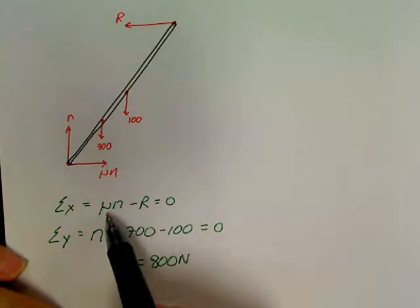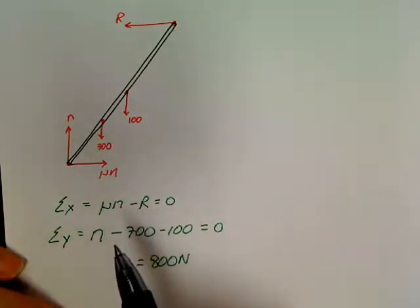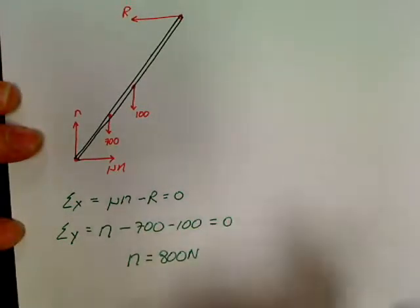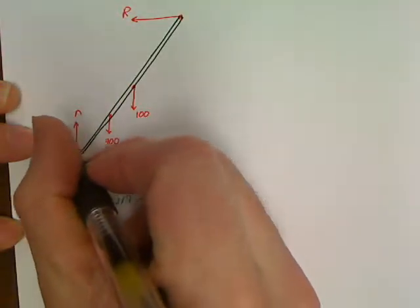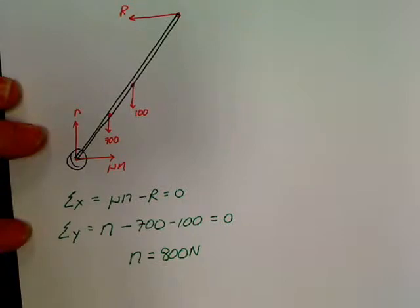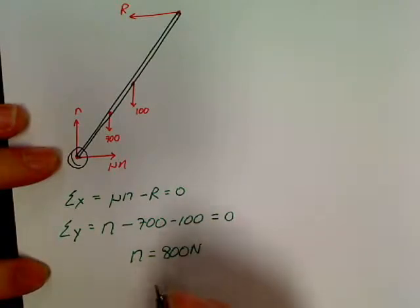And now it means if I want to find this mu, all I need to do is get this R up here. So I'm going to go back and now do the torque part of this problem. I'm going to go back and, like I told you, I always like picking the bottom part of the ladder in terms of being my pivot point for my torque. So that's exactly what I'm going to do, is pick the bottom of the ladder to be my pivot point.